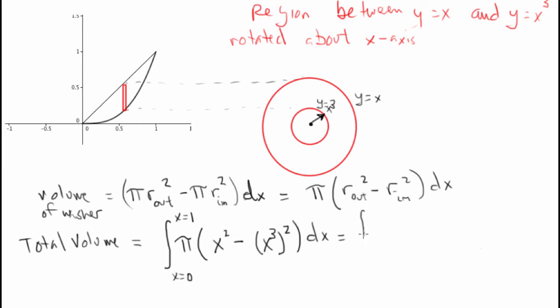Let's clean up this integral just a little bit so we get from 0 to 1. We'll pull out the pi because it's a constant times x squared minus x to the sixth dx. This we can simplify because we can do the antiderivative. It's pi times the quantity x to the third over 3 minus x to the seventh over 7. We're evaluating that from 0 to 1.